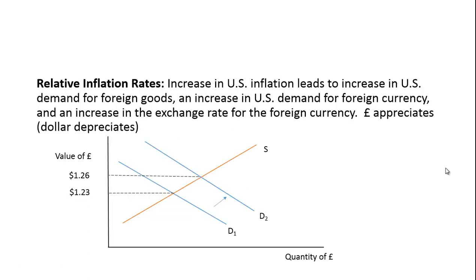Relative inflation rates: suppose an increase in US inflation leads to an increase in US demand for foreign goods. If things are more expensive in the US, you'll buy them where they're cheaper. That increases the demand for foreign currencies — US residents wanting to buy goods from abroad will have to exchange their dollars for, say, pound sterling. This increases the exchange rate for the foreign currency: the demand for the pound goes up, so the amount of dollars it takes to buy one pound sterling goes up. The pound has appreciated and the dollar has depreciated.